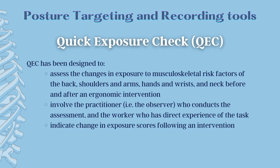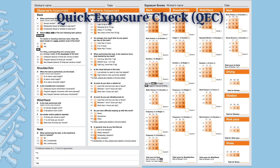The last tool is the Quick Exposure Check, or QEC. QEC has been designed to assess changes in exposure to musculoskeletal risk factors — back, shoulders and arms, hands and wrist, and neck — before and after an ergonomic intervention. It has also been designed to involve both the practitioner who conducts the assessment and the worker who has direct experience of the task, and it is designed to indicate change in exposure scores following an intervention. These are the most common tools used in assessing and evaluating the risk of musculoskeletal disorders associated with specific tasks within a job, and all of these assessment tools are helpful in preventing work-related MSDs and improving the work environment.